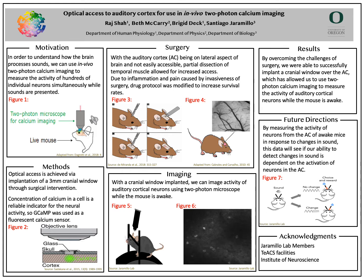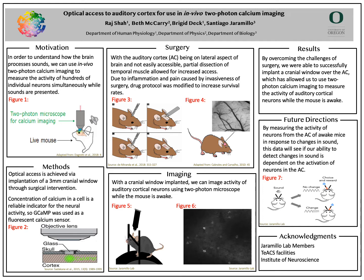How does this type of imaging actually measure the activity of neurons? Since the activity of neurons is directly correlated with the level of calcium in the cell, we can use a fluorescent calcium sensor known as GCAMP that allows us to visualize this activity in combination with the two-photon microscope.